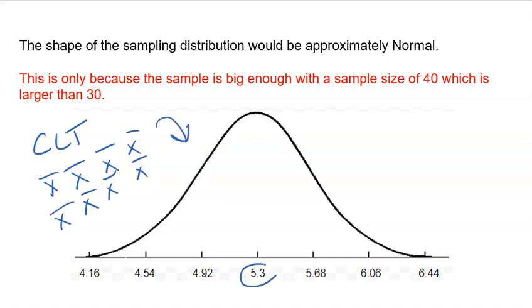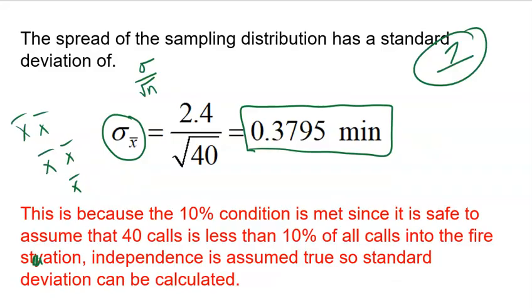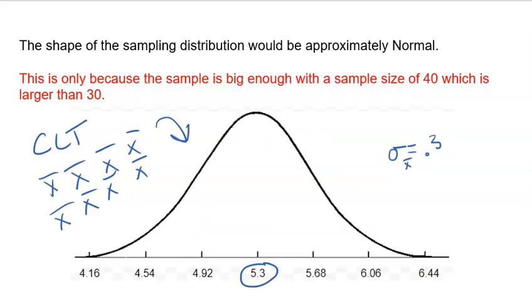So what I did was I put 5.3 in the middle because that's the center as we discussed. I did round the standard deviation for the sampling mean to 0.3. What did I run? It was 0.3795. I rounded it to 0.38. Probably shouldn't have done that, but when you try to fill in one of these models with a bunch of decimals, it tends to get crowded.